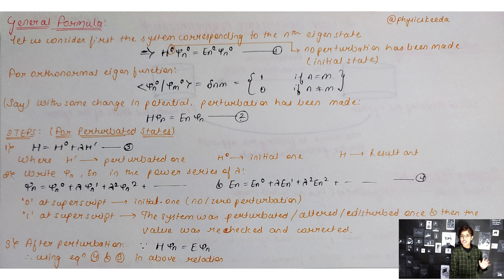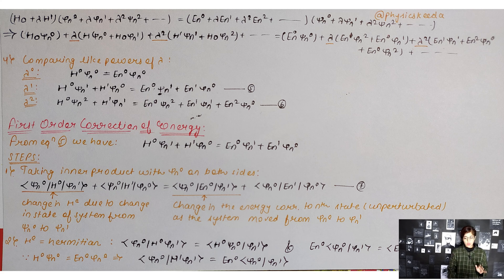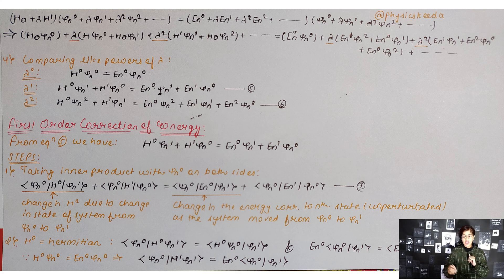At the third step, we write Hψ_m = Eψ_m. Substituting the expansions of H and ψ_m, we get (H₀ + λH')(ψ_m0 + λψ_m1 + ...) = (E_n0 + λE_n1 + ...)(ψ_m0 + λψ_m1 + ...). We then separate terms by collecting them according to the powers of λ on both sides.